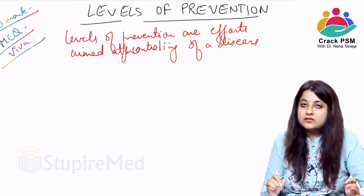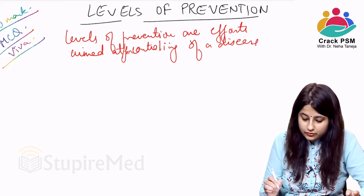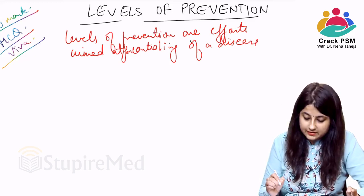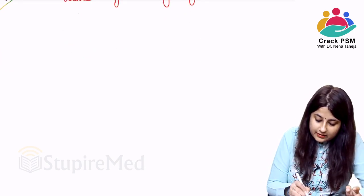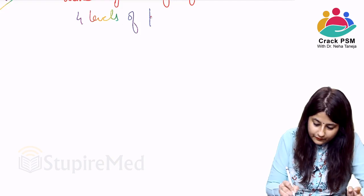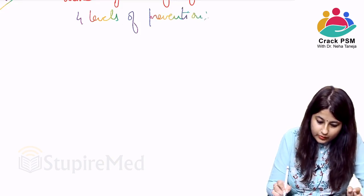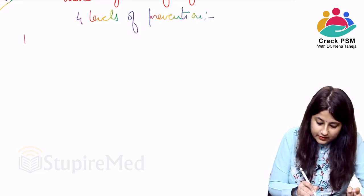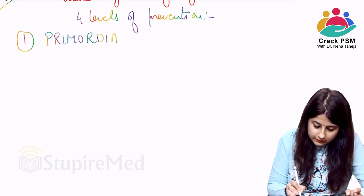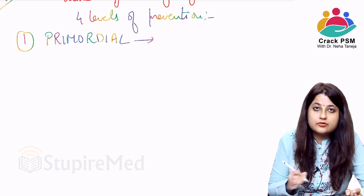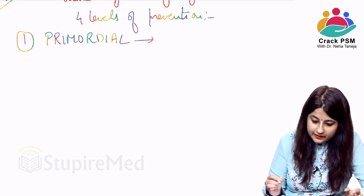How many levels of prevention are there? There are four levels of prevention. The first one is Primordial Prevention.